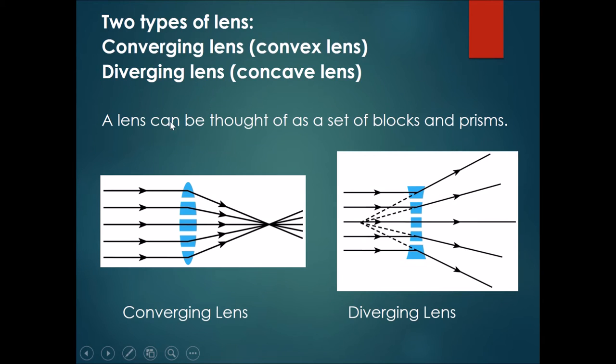A lens can be thought of as a set of blocks and prisms. For example, if it's a perfectly square block in the middle of the converging lens, the light would just pass through and continue straight. However, once you move one block to the top, these two sides are a little bit slanted towards each other, and the light that comes in will be refracted towards the center.